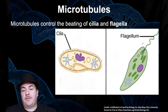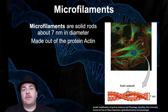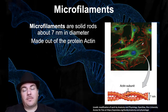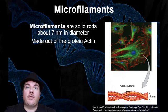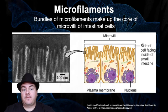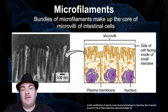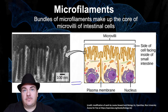The next type of cytoskeleton fiber is actin microfilaments — the smallest type. It's also made out of a protein; this time the protein is called actin. One thing actin microfilaments do is they're inside your intestine. Your intestine is basically a long tube that stuff passes through.